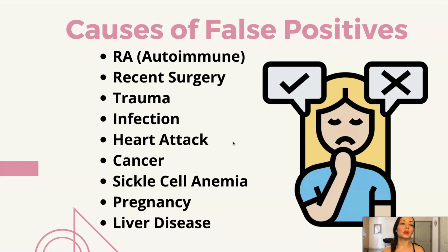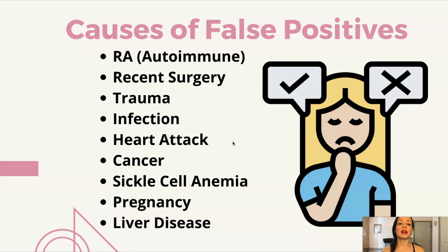Another case would be if a patient says all of a sudden they feel a little bit of shortness of breath and you're worried about whether they have a PE. Again, you can call the provider and ask for a D-dimer to just rule that out.